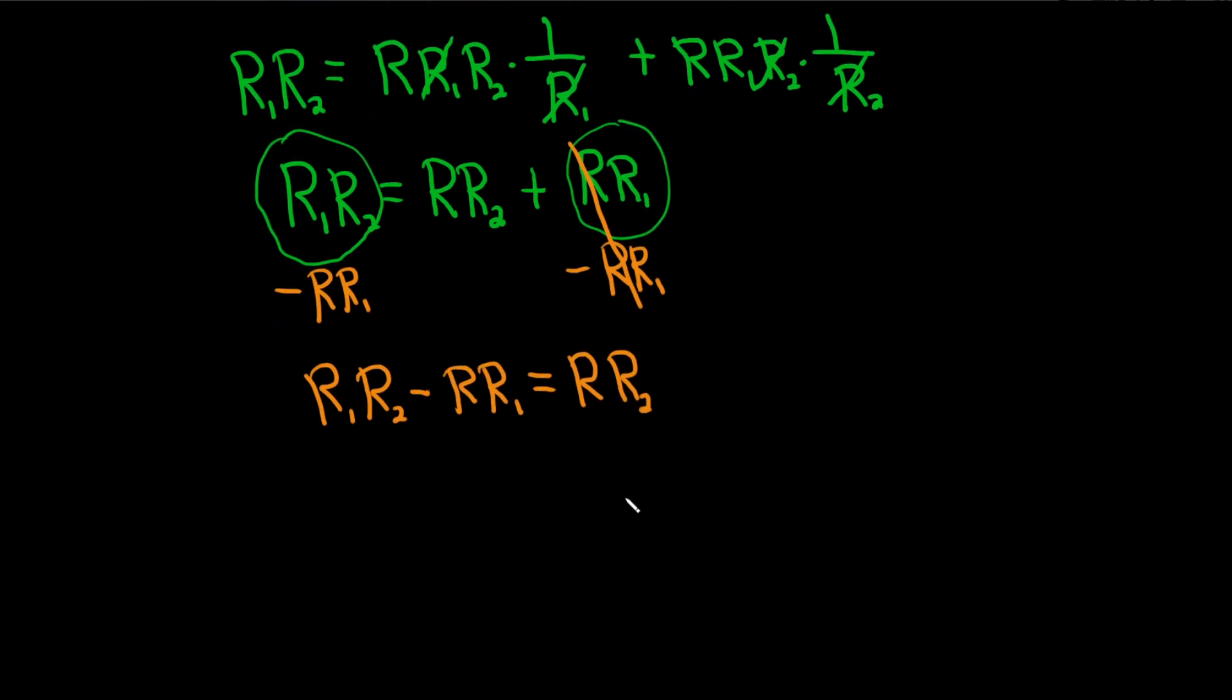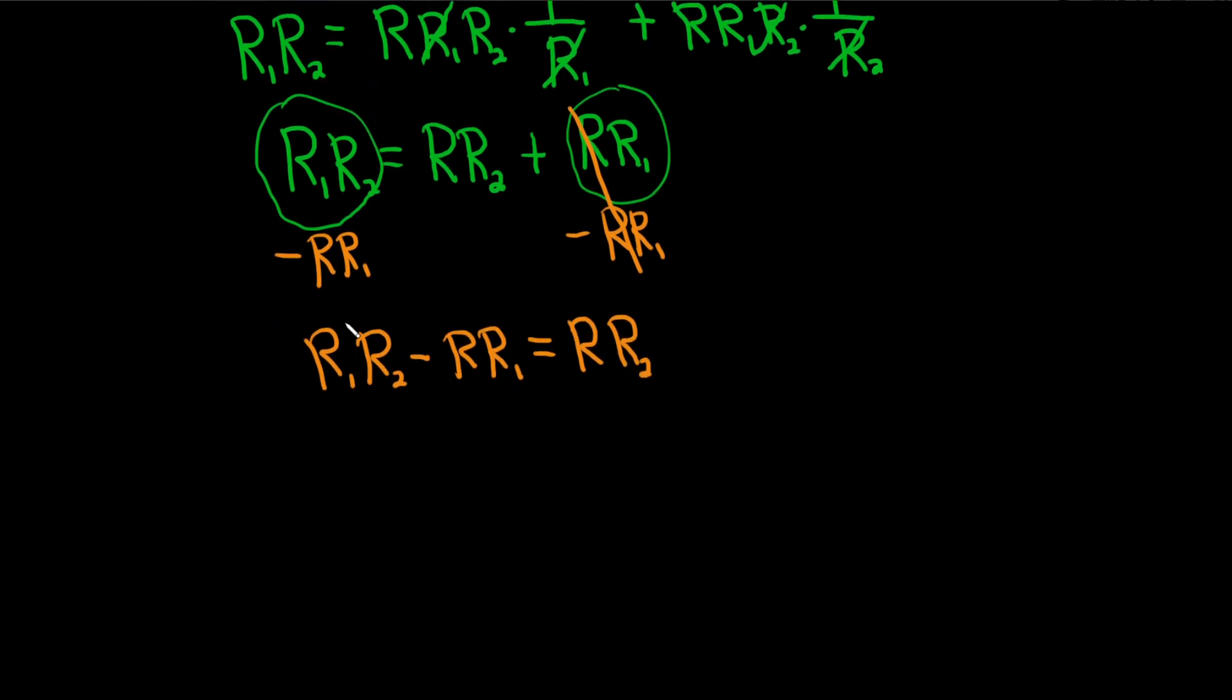These both have R1s in them, so we can factor out an R1 like this. You write your parentheses, and then you say, what goes here? What's missing to get R1, R2? You've already got the R1. You just need the R2. Then minus. Same thing. You already have R1. You're trying to get this. You're missing R.